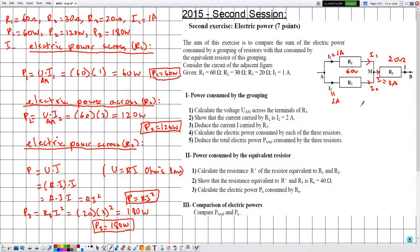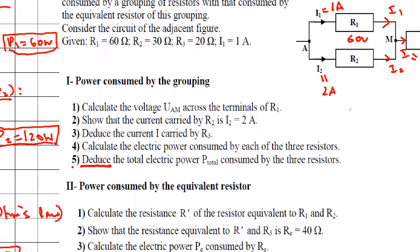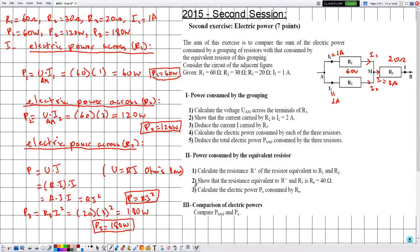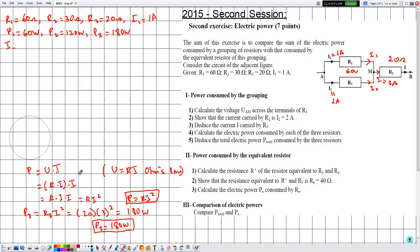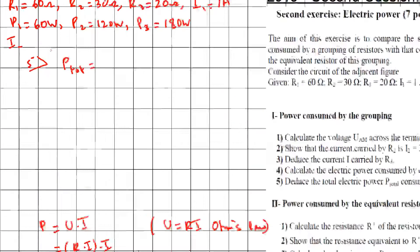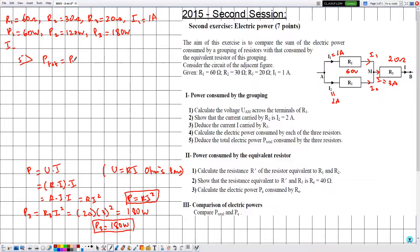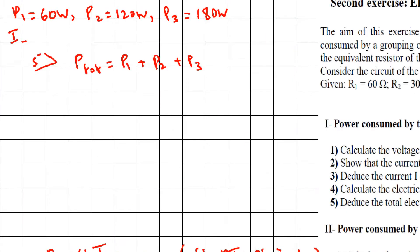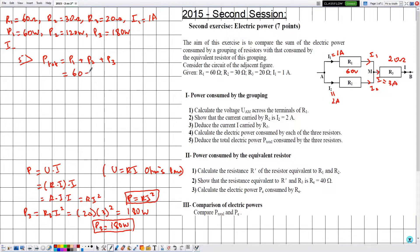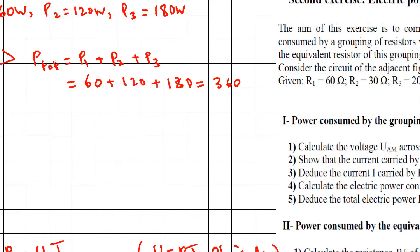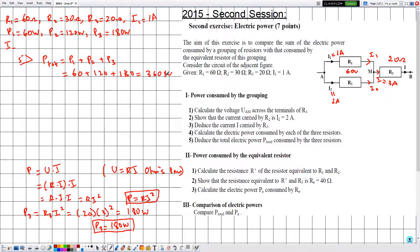In number five, deduce the total electric power consumed by the three resistors. Using the results from part four — P1, P2, and P3 — the total electric power is P_total = P1 + P2 + P3. In physics, 'total' always means the sum. P1 = 60, P2 = 120, P3 = 180, giving 360. Since all are in watts, P_total is equal to 360 watts.